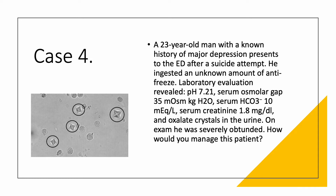Bicarbonate is very low at 10, and serum creatinine is 1.8. You look at the urine and you see oxalate crystals — they look like little envelopes. On exam, the patient is severely obtunded. How would you manage this patient?